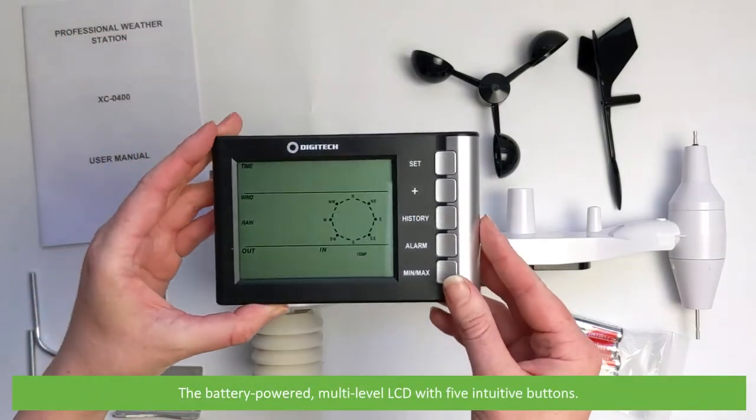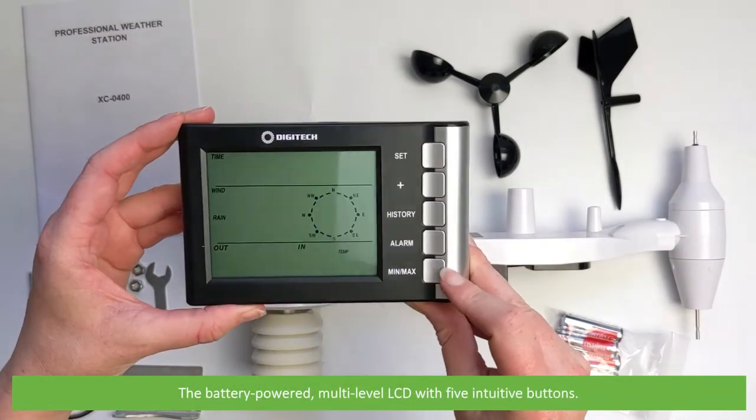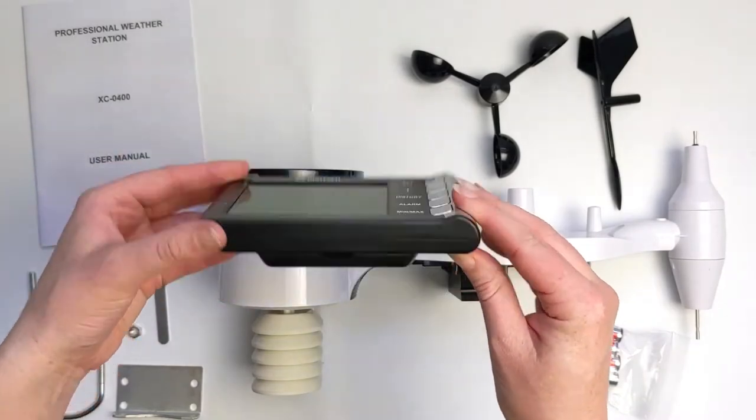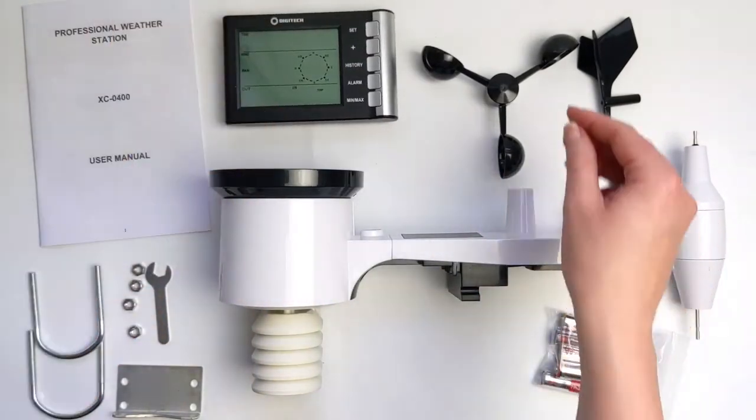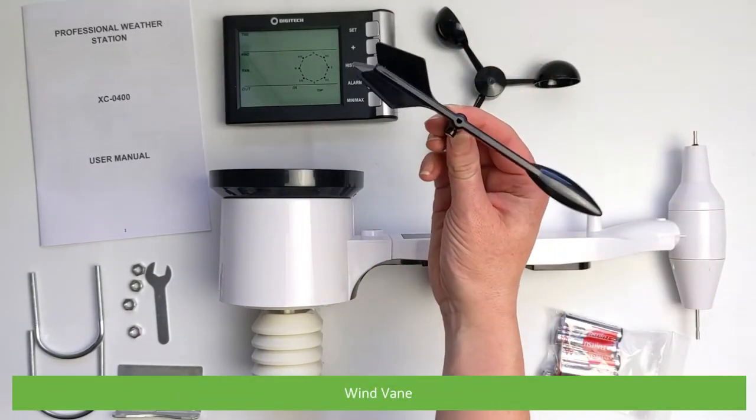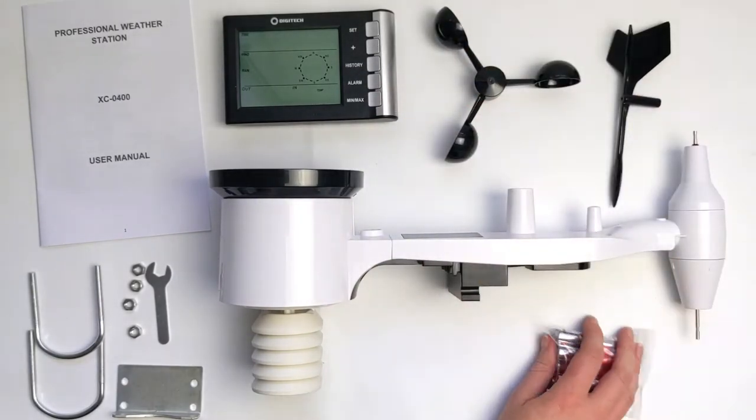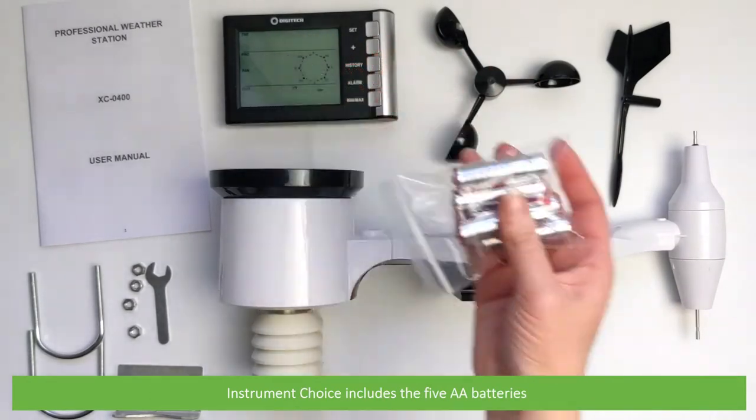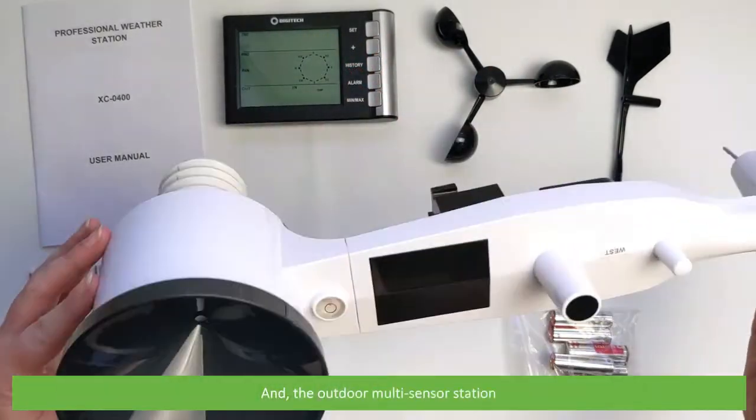The battery-powered multi-level LCD with five intuitive buttons, wind cups, the wind vane, Instrument Choice includes the five AA batteries and the outdoor multi-sensor station.